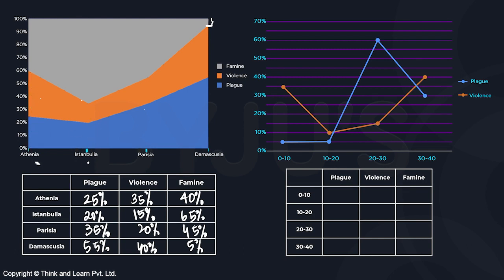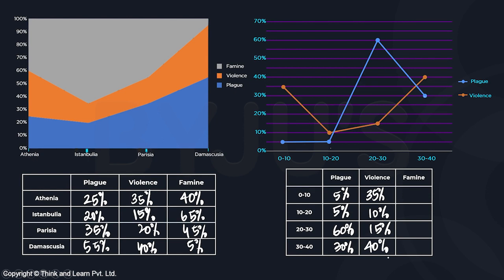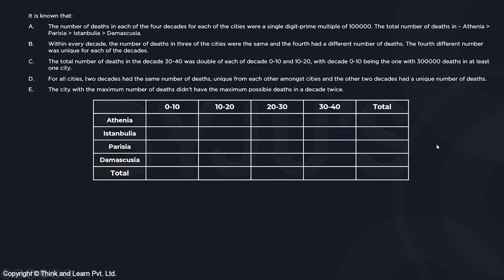Looking at the line chart decade-wise: plague percentages are 5, 5, 60, and 30 across the four decades, summing to 100. Violence percentages are 35, 10, 15, and 40. The famine breakup is not directly readable but must make each row sum to 100 percent. We will calculate famine values later using the additional constraints.